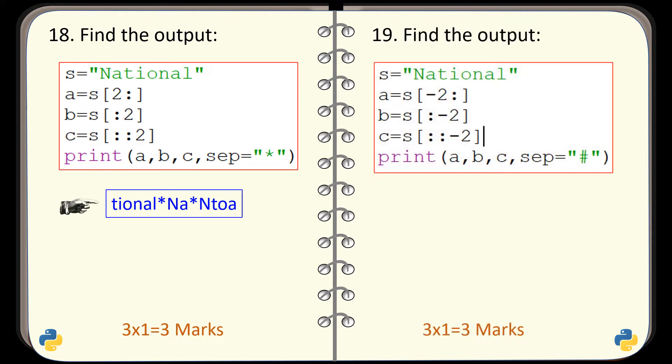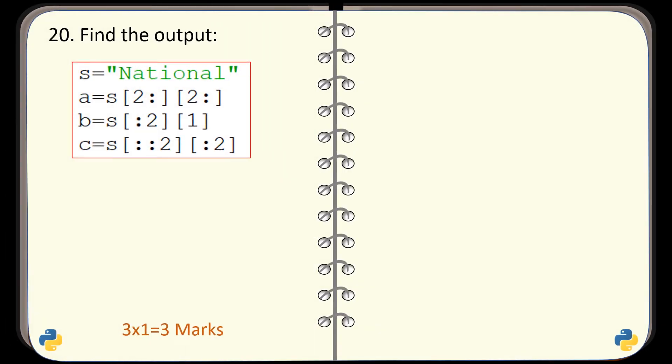Question number 19. Again, find the output of this given code — be careful with this slicing. And the output generated is this one. Question number 20. Again, find the output generated by this code. Now we are applying slicing on a slice, so have patience, do it carefully. And the correct output is this one.